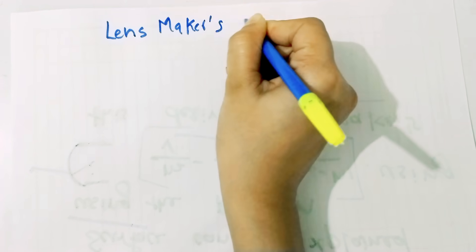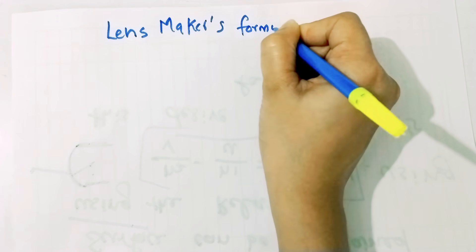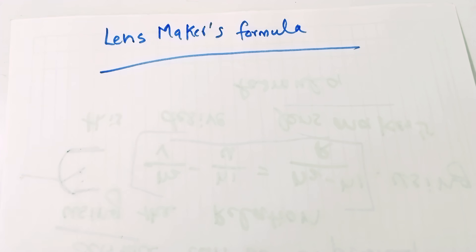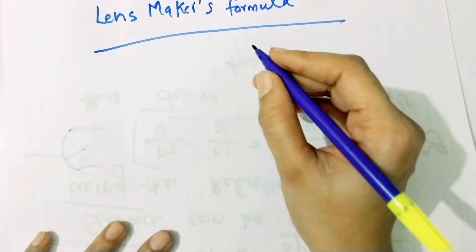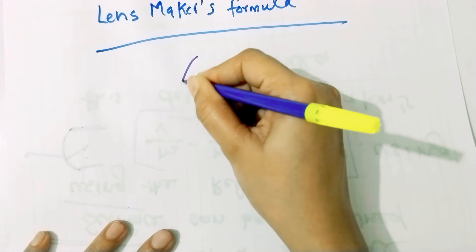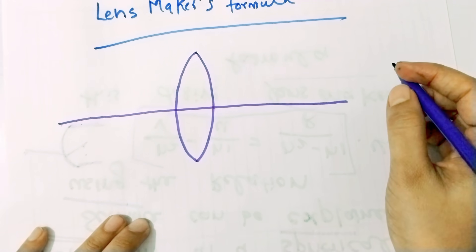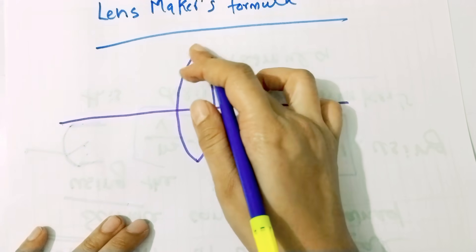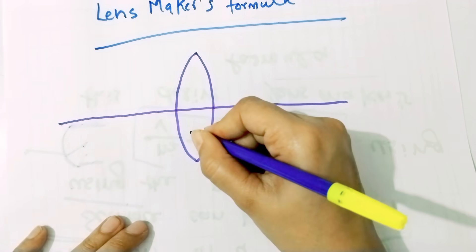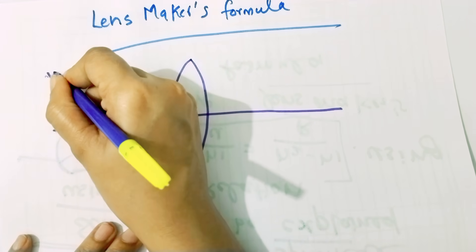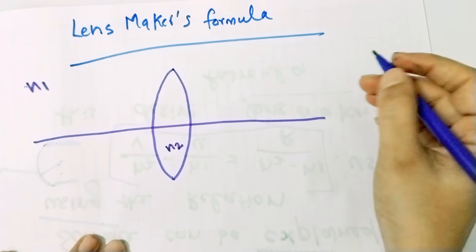You have the Lens Makers Formula — Derived Lens Makers Formula. Let's take a look at the figure. The figure shows the same lens. This is the principle axis. This is a convex lens. This is the refractive index N2. This is air, with refractive index N1.